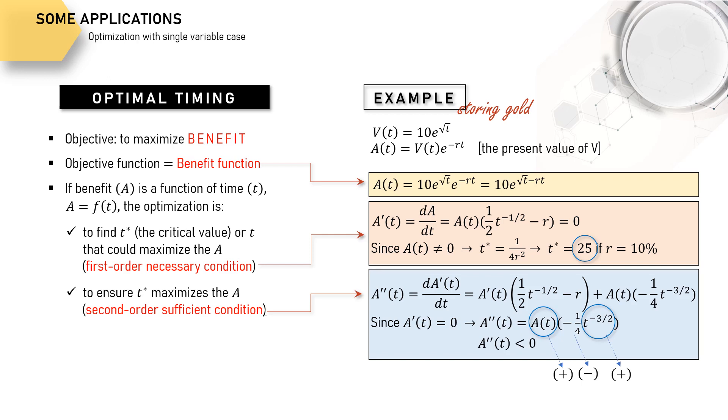With negative second derivative, 25 years of gold storage will give the maximum present value of gold when it is sold. The present value is A_max which is equal to 900.17 unit value.